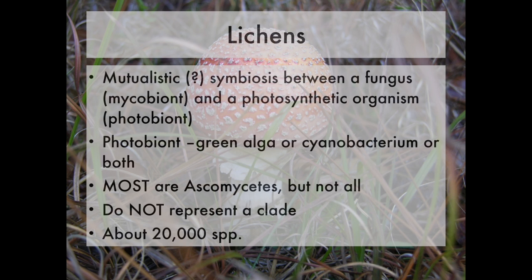Most ascomycetes that are lichenized are found within a few clades, but not all of them. This is something that has evolved multiple times independently in the fungi. And altogether there are about 20,000 described species of lichenized fungi. So why do we talk about them now with the fungi rather than when we were talking about green algae and cyanobacteria? The answer is that the majority of the diversity is in the form of the fungi.